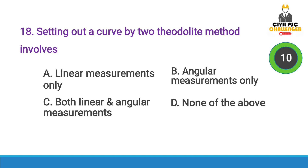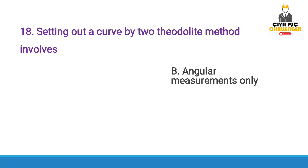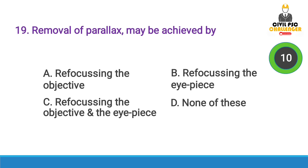Next question: Setting out a curve by the two-theodolite method involves — Answer option B, angular measurements only.